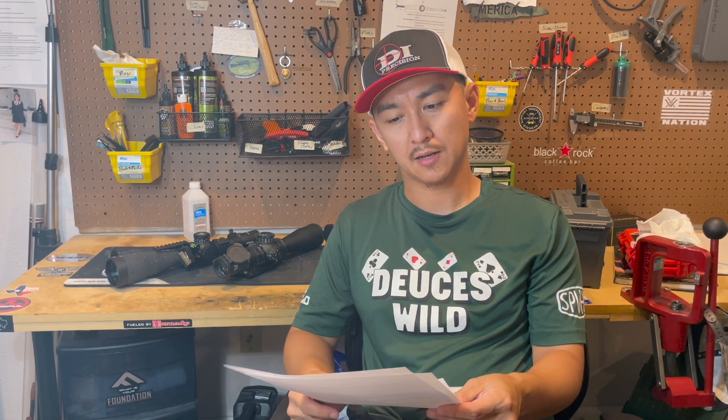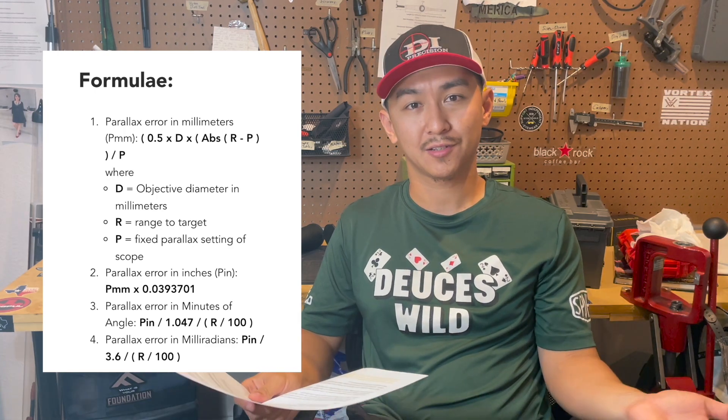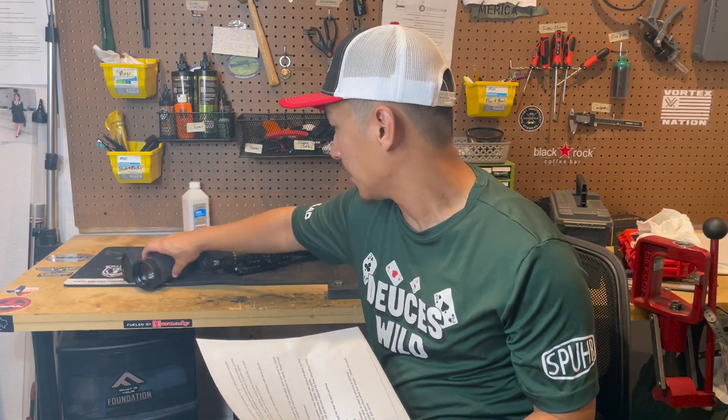A few months ago I was listening to a Vortex podcast where they discussed a parallax error formula. I found a website — it's an insurance website oddly enough — that has a calculator you can use to calculate your parallax error. I'll send a link in the description below. You plug in D, which is your objective lens diameter in millimeters. For most scopes — Zero Compromise, Leupold Mark 5, or the Vortex Razor Gen 3 — that's 56 millimeters. I chose to calculate in 25-yard increments.